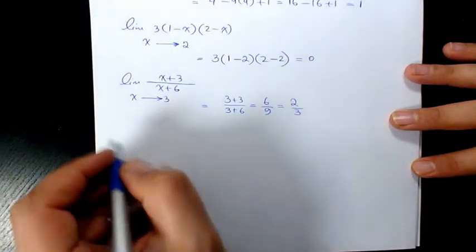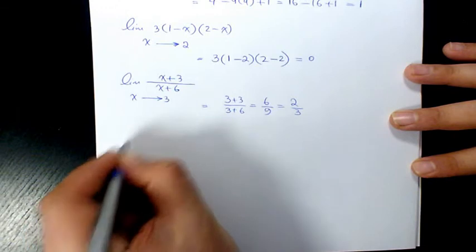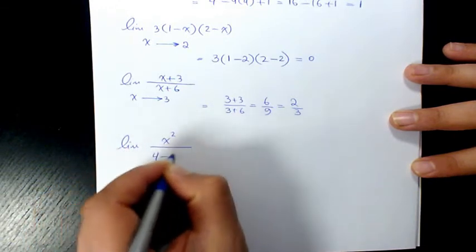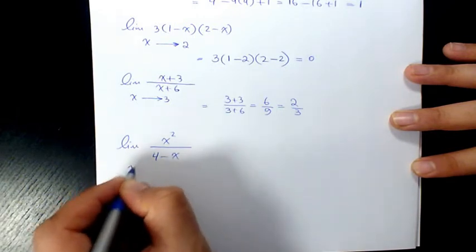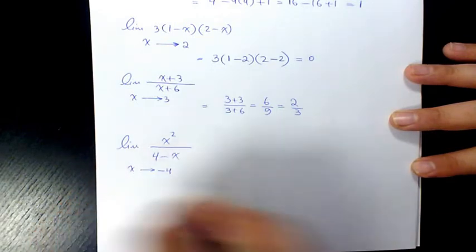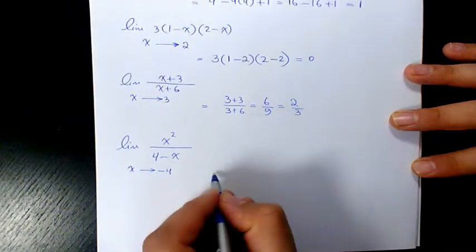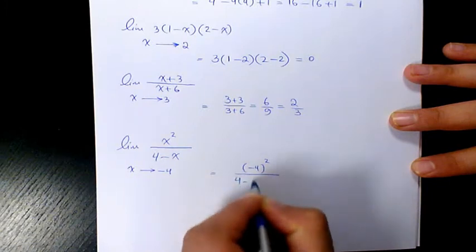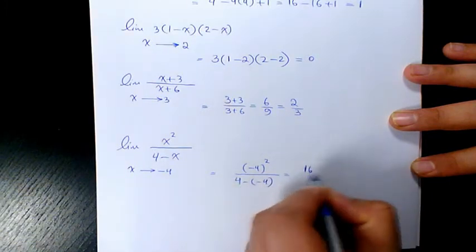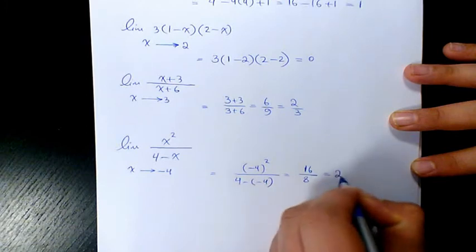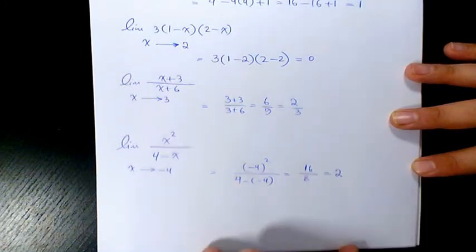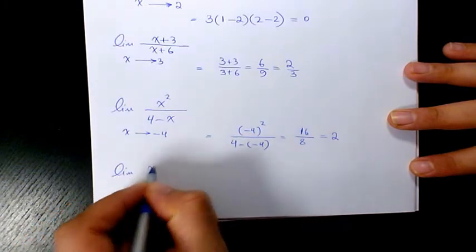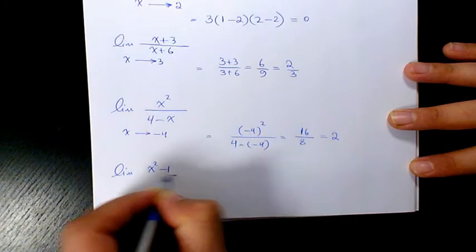Next example: the limit of x squared over (4 minus x) when x is approaching negative 4. In this case you get negative 4 to the power of 2 over (4 minus negative 4), which is 16 over 8, and the answer is going to be 2.